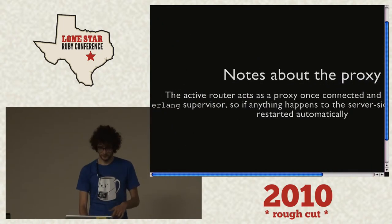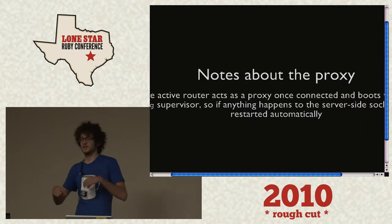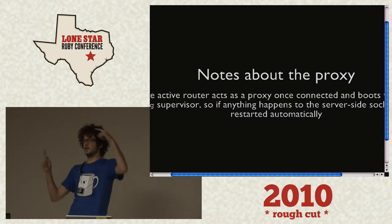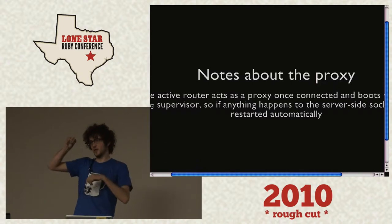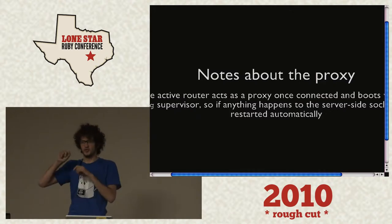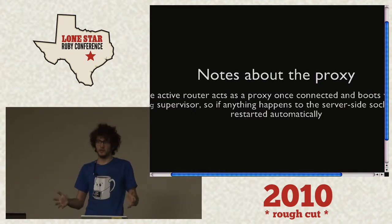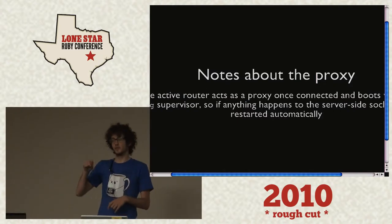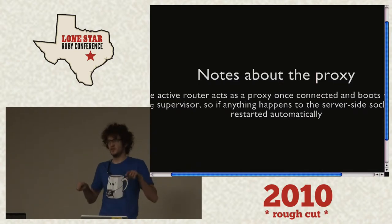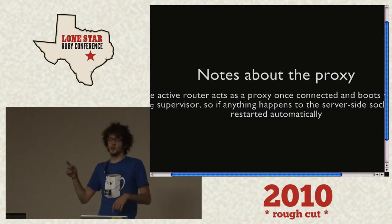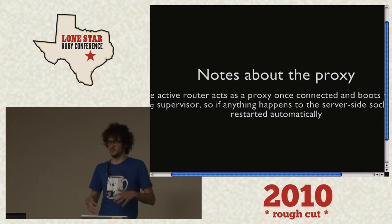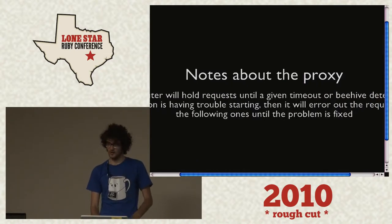The router acts as a proxy. Bob is here and Twit is here — they connect, and then a new process is spawned off. One neat thing about that process is it's also spawned with a supervisor. In Erlang, a supervisor's entire job is to watch this process. So if this process dies — something happens on the server side, or one of the distributed routers goes down — that supervisor will restart the proxy connected to the two clients seamlessly. If I'm connected to server A and server A goes down, server B already knows about my process, so it will restart the server and I, as Bob, will never know that anything happened. The router holds requests until a given timeout; if that timeout is reached, the user sees an error.